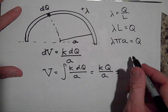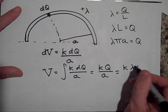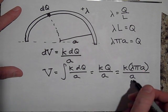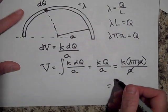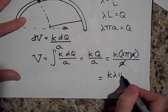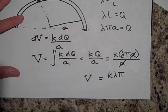Or if I wanted to I could put this in - it's k times lambda pi a. That's q all over a. The a's cancel and so it's k lambda pi. That's what the potential is at that semi-circle.